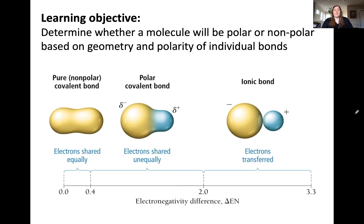It will be helpful to remember from a previous video the difference in these various bond characterizations. One type of bond we've discussed is a nonpolar bond, which has a very small difference in electronegativity between the two atoms. On the opposite end of the spectrum we have an ionic bond, which is a transfer of electrons due to a very great difference in electronegativity. In the middle we have polar covalent bonds, and that's what we'll be discussing now.